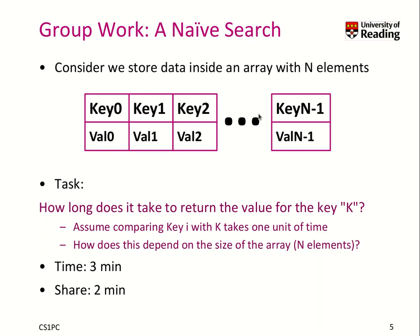How long does it take with n elements to find out if k is in these keys? For this kind of analysis it's important to figure out how long it would take to do one comparison. If you have one key, like key 0, and you compare it with k, we assume natively this takes just one unit of time. So two comparisons take two time units. Now spend about three minutes thinking about how you would formulate and code this in C. Pause the video now.